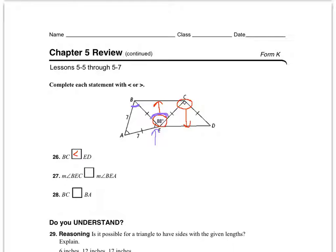In triangle BAE, I now have three congruent angles, making it an equilateral triangle. Each angle measures 60 degrees. The other angle we were comparing — angle BEC — is 88 degrees. Since 60 is less than 88, angle BEA is less than angle BEC. Written in the order given: angle BEC is greater than angle BEA.